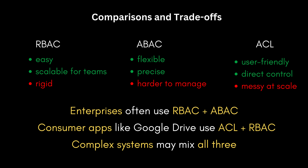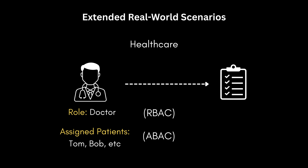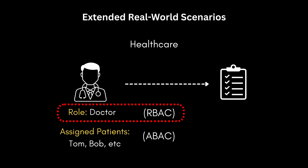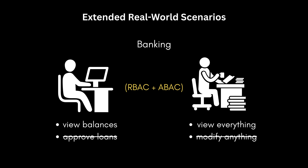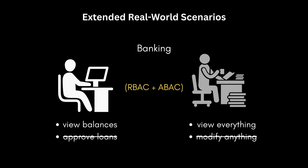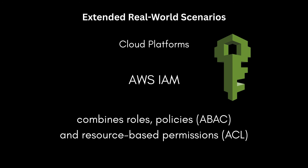Here are some real-world scenarios. In healthcare, a doctor can only view records of a patient they are currently assigned to — that's ABAC — but their core ability to view any record at all comes from their role as a doctor, which is classic RBAC. In banking, a teller can view account balances but not approve loans, while an auditor can view all transactions but not modify any data — foundational RBAC, often enhanced with ABAC. On major cloud platforms like AWS, their IAM system is a powerful hybrid combining user and resource roles, flexible ABAC policies, and resource-specific permissions that function like ACLs.